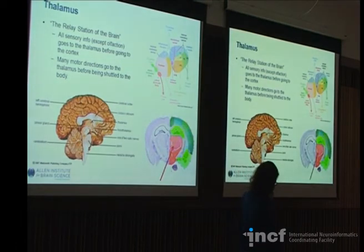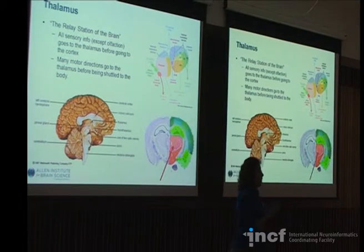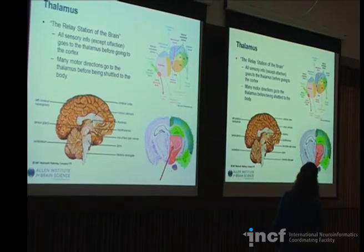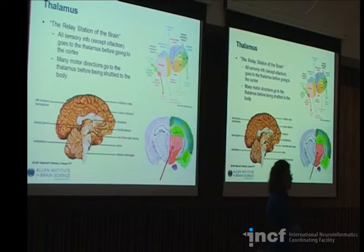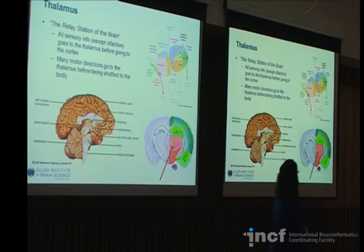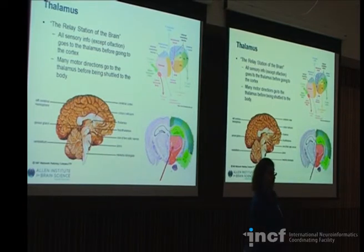The thalamus is the other big structure in the cerebrum — it is the relay station of the brain. With the exception of olfaction, all of your sensory processes go first through the thalamus before being divvied out to the cortex. The thalamus is made up of quite a few smaller nuclei, each with individual subdivisions. Each nucleus receives specific input of a specific modality and sends it out to help integrate information. Motor directions also go to the thalamus before being shuttled out to the body.